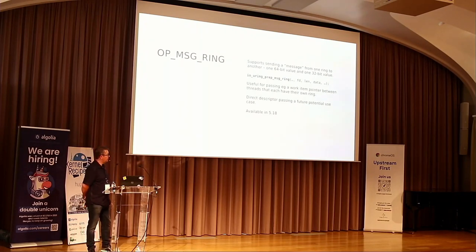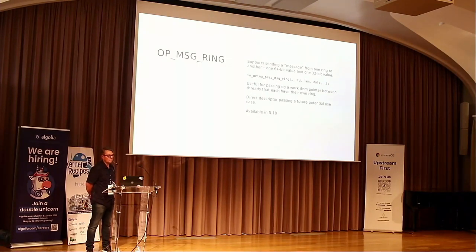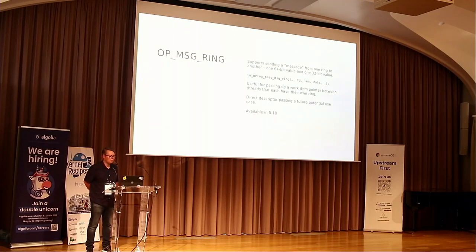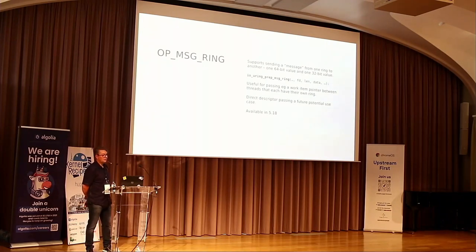Message ring support was added — a way to send messages between rings. The original use case was a server that accepts connections and then hands them off to another ring for actual work, deferring that decision to the latest possible moment for better load balancing. Message ring is a basic way to send one 32-bit and one 64-bit value between two different rings. It also has potential for file descriptor passing between rings using direct/fixed descriptors, similar to how you'd use SCM rights on regular file descriptors, though that support isn't there yet.